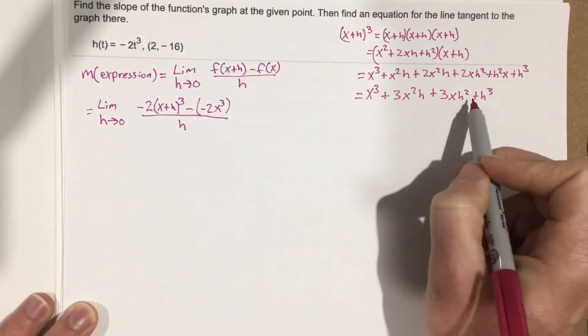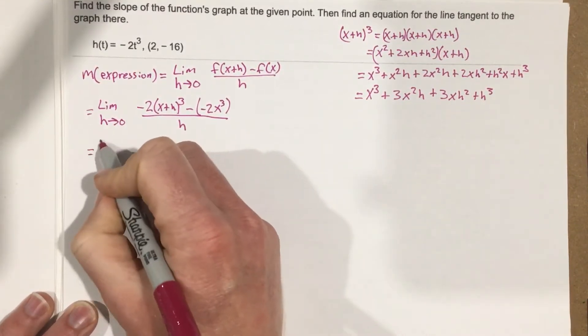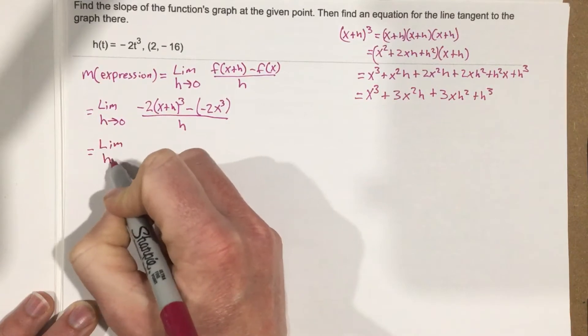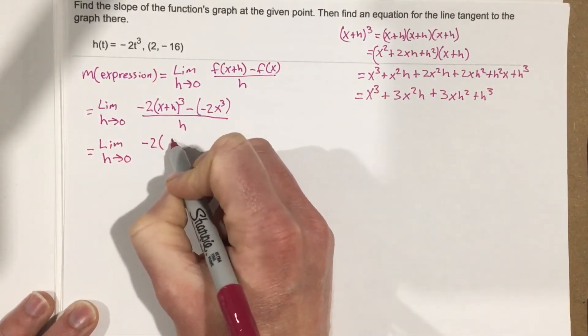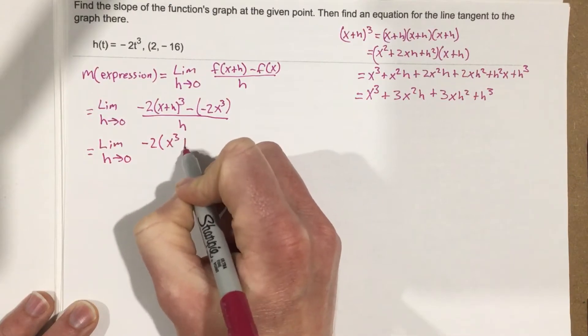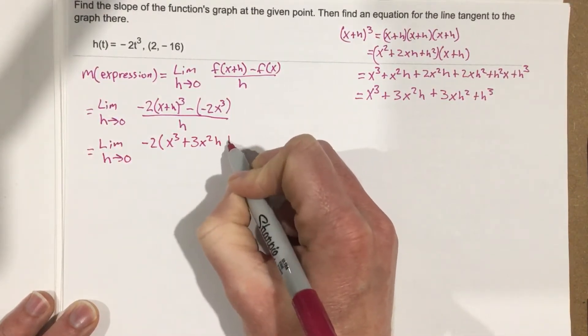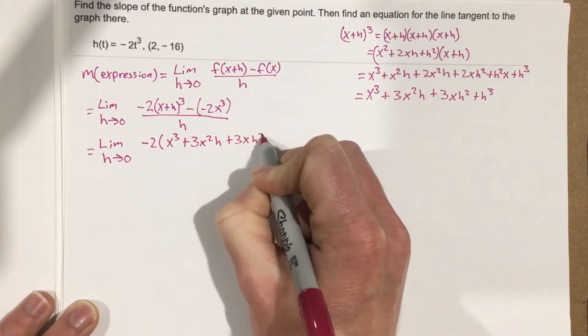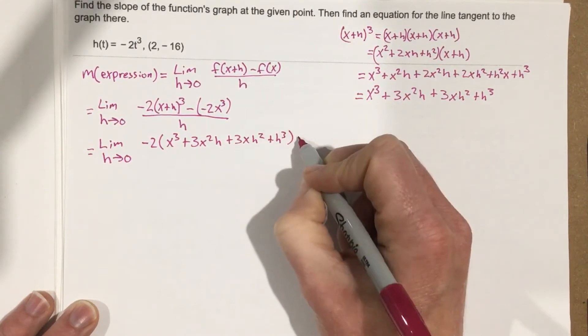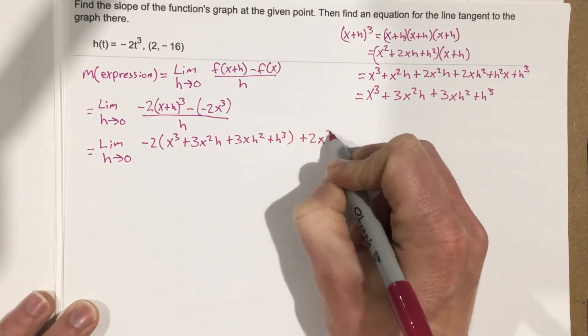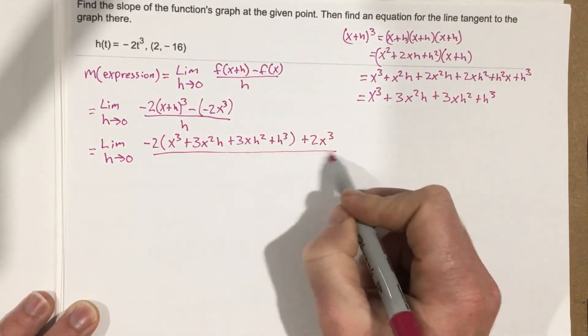So I can take this and plug it in and replace the x plus h cubed. And so that's going to give me a limit as h approaches 0, negative 2 times parentheses x cubed plus 3x squared h plus 3xh squared plus h cubed, and then I'll get plus 2x cubed when we distribute the negative there. That's all over h.